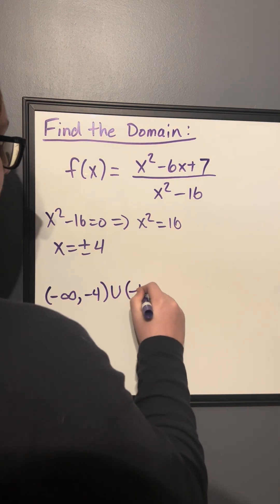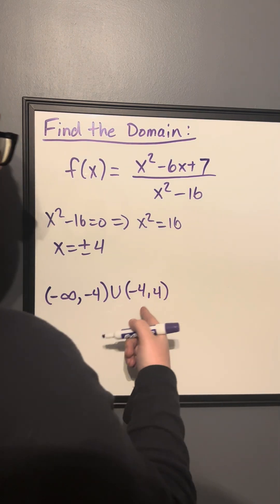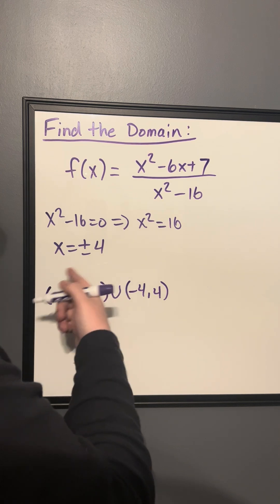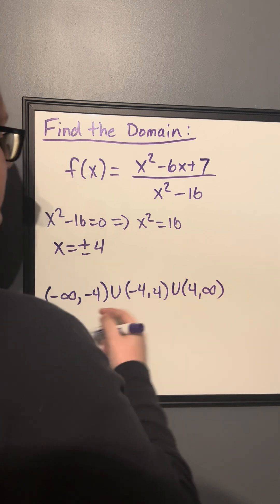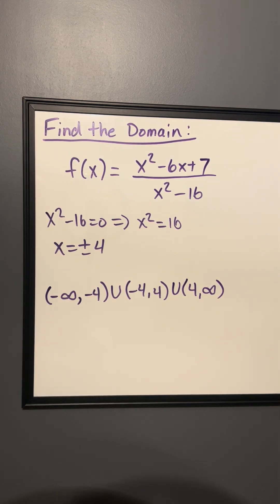Then in union with negative 4 to 4, both of those in parenthesis because it doesn't get there because they will be undefined. And then in union with 4 to infinity. So this is going to be our final domain in interval notation.